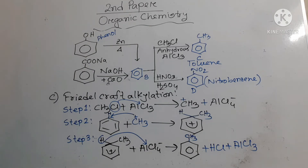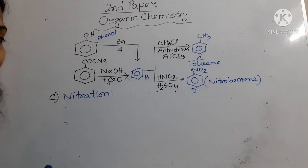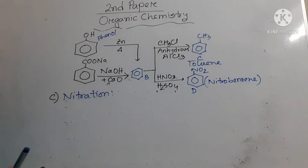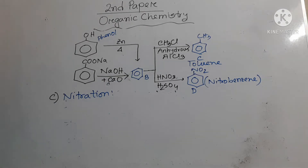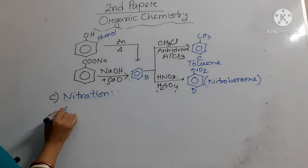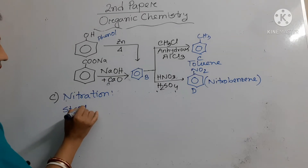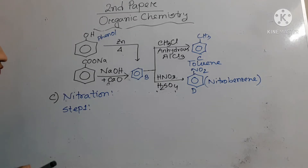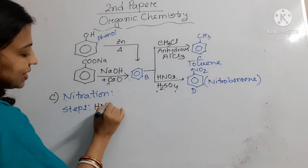Now let us discuss the mechanism when benzene is converted to nitrobenzene. When benzene is converted to nitrobenzene, the nitration mechanism takes place. In the nitration mechanism, in step 1, HNO3 (nitric acid) reacts with sulfuric acid.